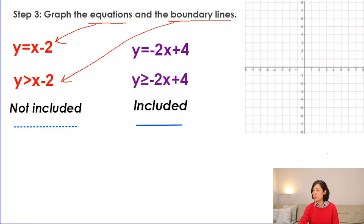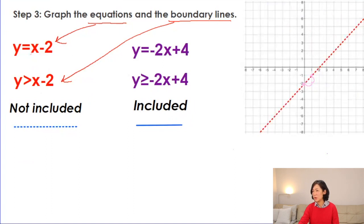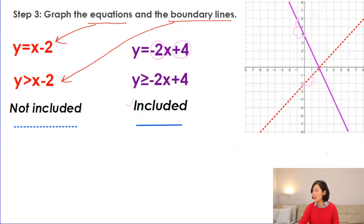First, draw the linear equation y = x minus 2. Begin with the y-intercept and the gradient of 1: one right, one up, then connect them. Check your symbol — there's no equal sign, so you must use a dotted line. For the second equation, y = minus 2x plus 4, begin at y-intercept 4, gradient is minus 2: one left, two up. Connect them — this time there is an equal to sign, so use a solid line.